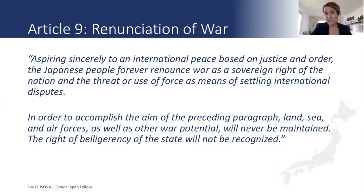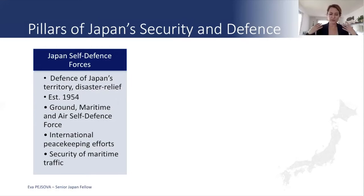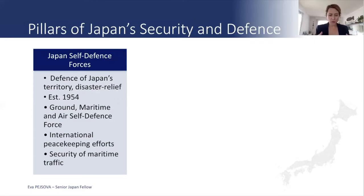That does not mean that Japan is left completely defenseless. Already in 1954, Japan was allowed to establish its Self-Defense Forces to provide for the security of its national territory and to address all domestic threats — disasters, terrorism, and so on. It is divided into ground, air, and maritime self-defense forces, very much like a regular army, with the only exception that it can act solely within the jurisdiction and area of the Japanese territory.